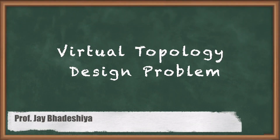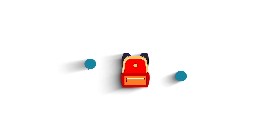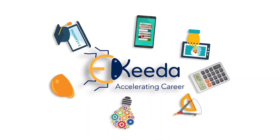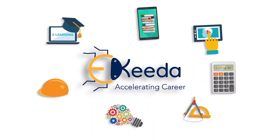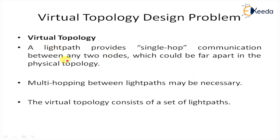Hello students, here we are going to learn about the virtual topology design problem. A light path provides single-hop communications between any two nodes which could be far apart in a physical topology. However, having a limited number of wavelengths, it may not be possible to set up a light path between all user pairs, so multi-hopping between light paths may be necessary. The virtual topology consists of a set of light paths.